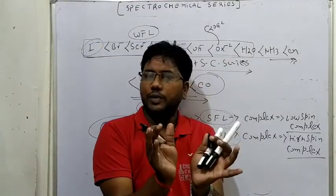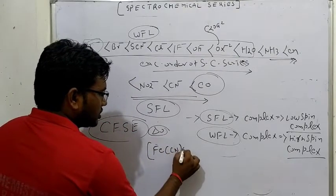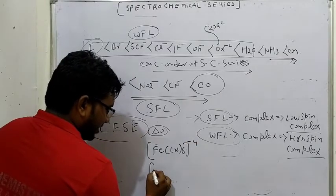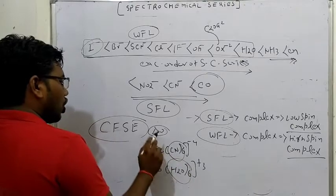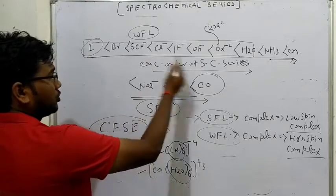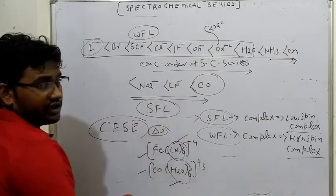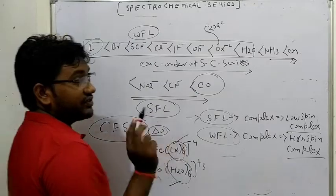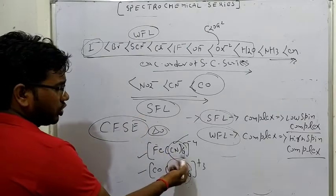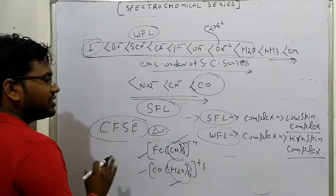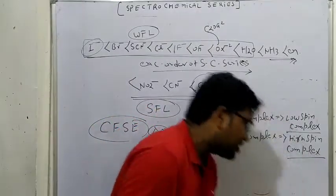मान लो 2 ligands आपके पास हैं - एक complex [Fe(CN)₆]⁴⁻ दे रखा है और एक complex [Co(H₂O)₆]³⁺ दे रखा है। अगर आपको पता करना है कि कौन सा ligand strong होगा या weak होगा - सबसे simple तरीका है series याद हो तो - CN⁻ strong में आता है, water weak में आता है। अगर याद न हो तो CFSE निकाल लीजिए - coordination number six है तो ये octahedral होंगे, CFSE निकालिए, जिसकी ज्यादा आएगी वो strong होगा, जिसकी कम आएगी वो weak होगा।